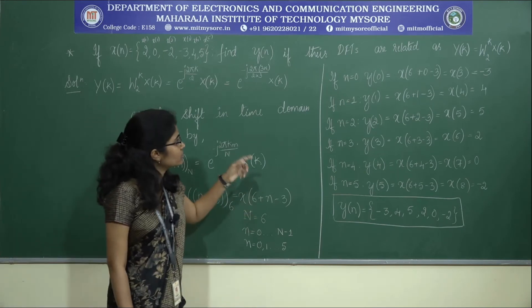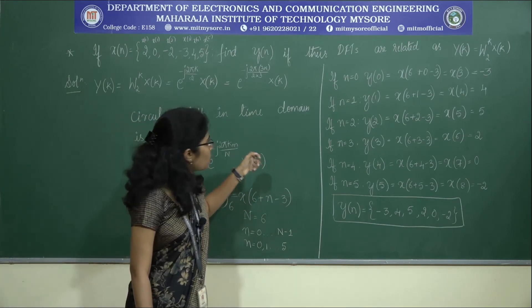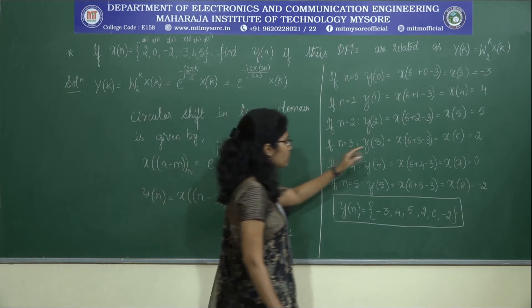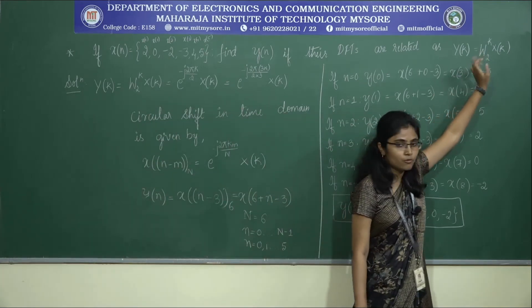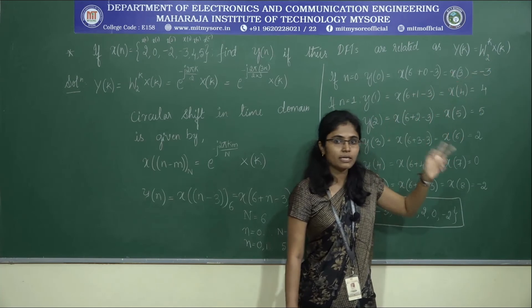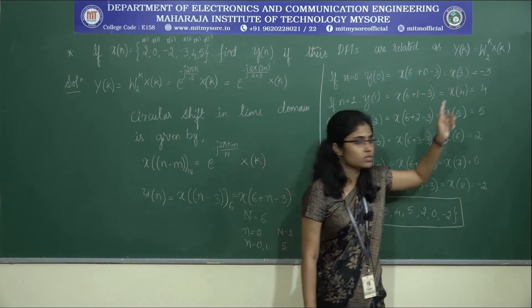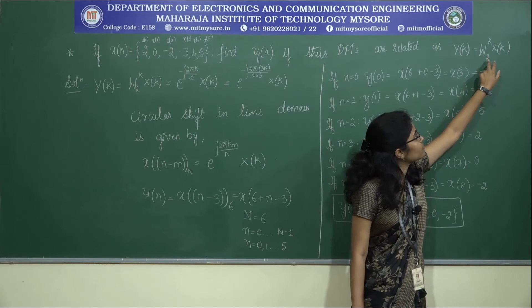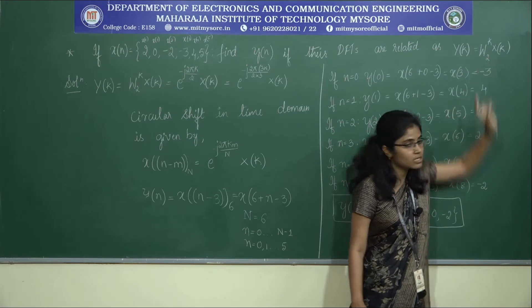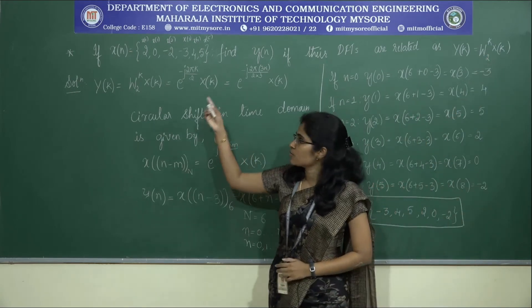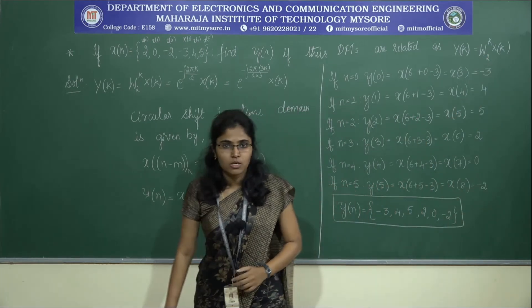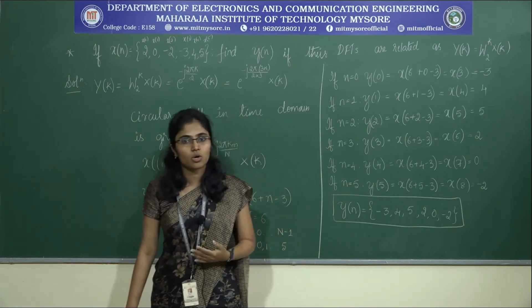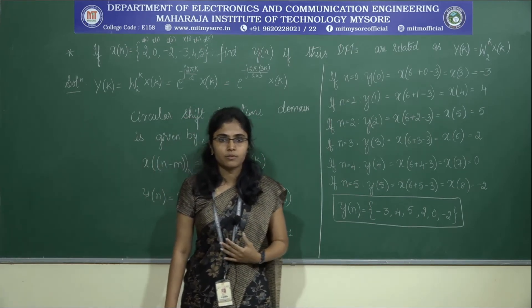Three types of circular shift problems were covered: first, where the exponent of omega is positive; second, where it is negative; and third, where the value of N from the exponential differs from the number of samples given. Keep these three types in mind when solving similar problems.